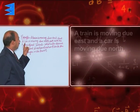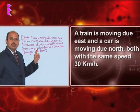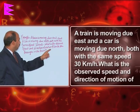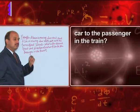A train is moving due east and a car is moving due north, both with the same speed of 30 kilometers per hour. What is the observed speed and direction of motion of the car to the passenger in the train?